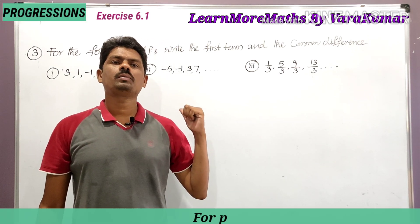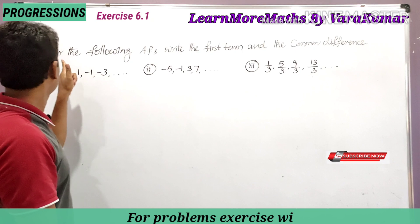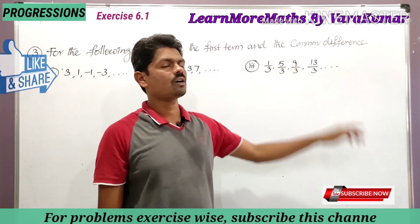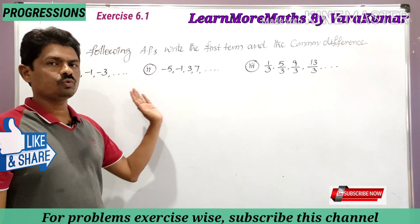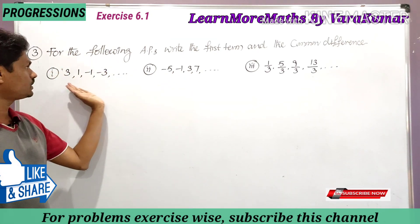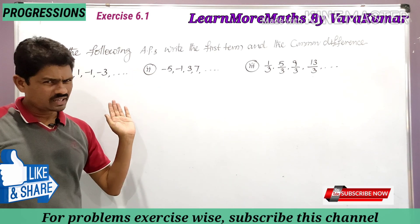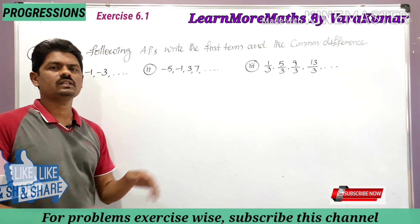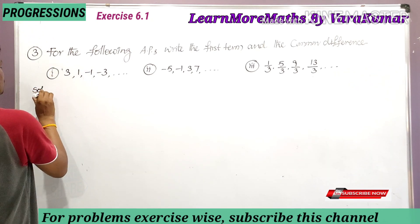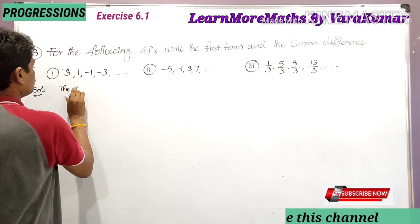Now we have to solve the third problem from Exercise 6.1. For the following APs, write the first term and the common difference. There are four parts in the third problem. He has given the series and is asking to write the first term and the common difference — very easy.